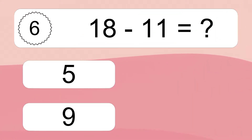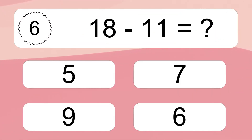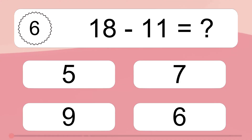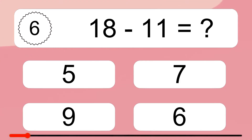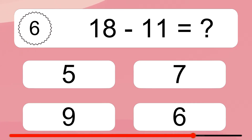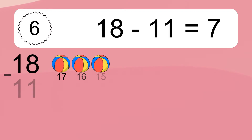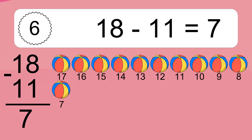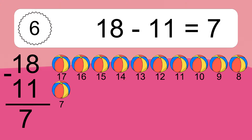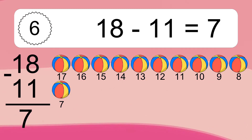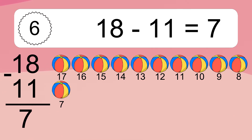18 minus 11 equals what? 18 minus 11 equals 7. Let's count it. 18, 17, 16, 15, 14, 13, 12, 11, 10, 9, 8, 7.